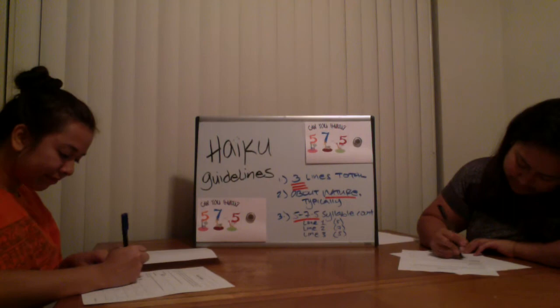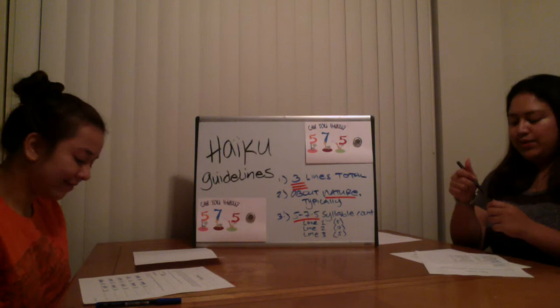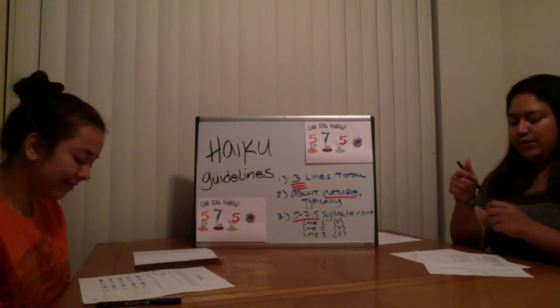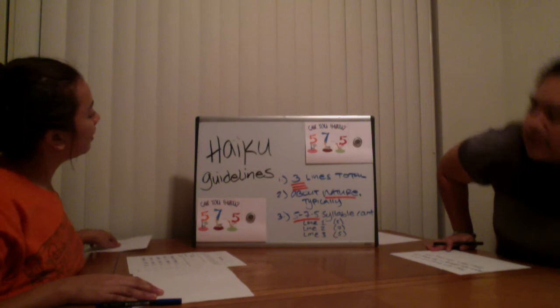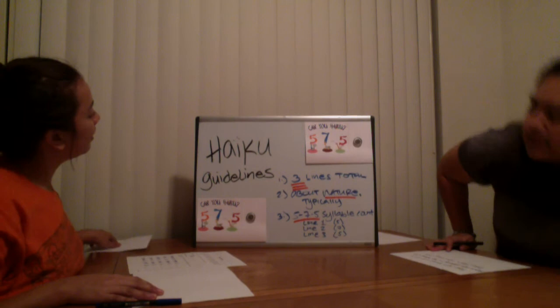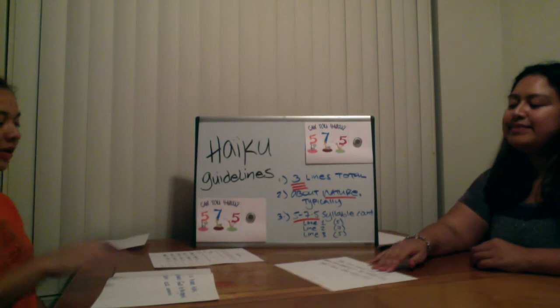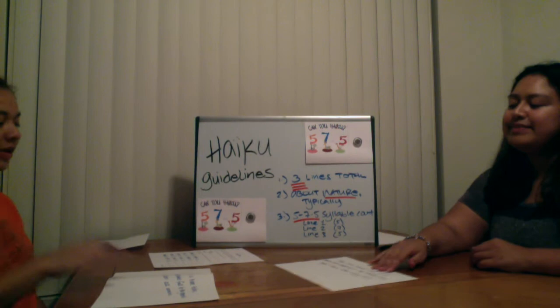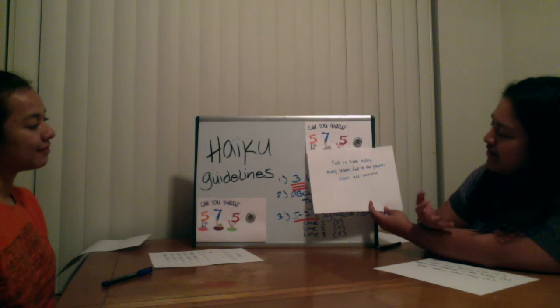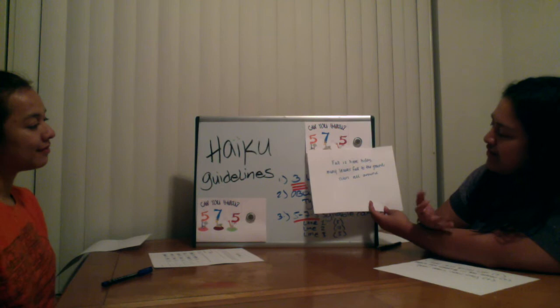Okay, so now I'll give you a blank sheet of paper, and using the whiteboard as a tool, your handout, and my sample haiku as a model, I want you to write out your own haiku poem. So now that you're finished writing your haiku, let's take a look at it. It says: 'Fall is here today' — five. 'Many leaves fall to the ground' — seven. 'Colors all around' — five. So it's five, seven, five. There are three lines, and it's about fall, so nature. Good job. Thank you.